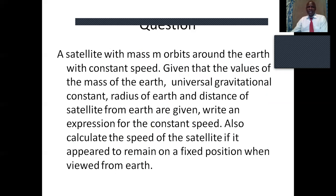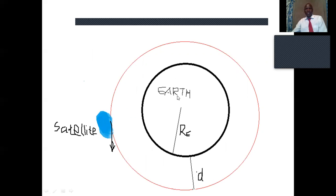We can now look at a question to apply these concepts. A satellite with mass m orbits around the Earth with constant speed. Given the values of the mass of the Earth, the universal gravitation constant, the radius of the Earth, and the distance of the satellite from the Earth, write an expression for the constant speed, and also calculate the speed of the satellite if it appears to remain in a fixed position when viewed from the Earth.